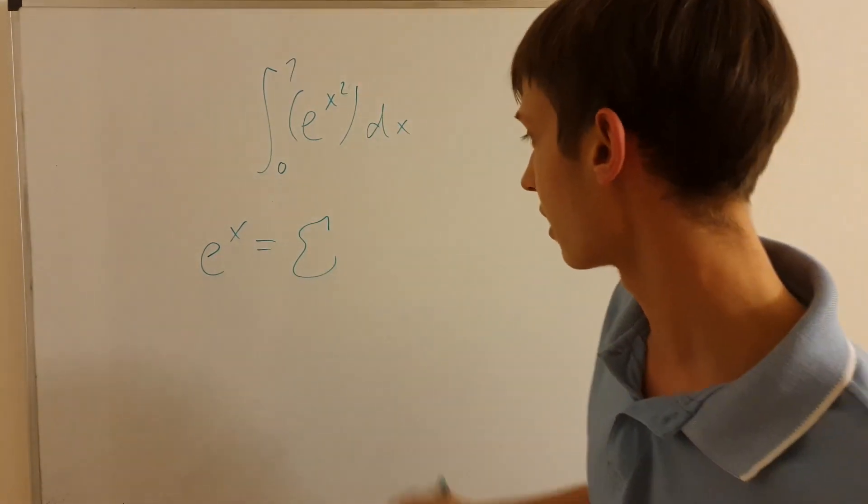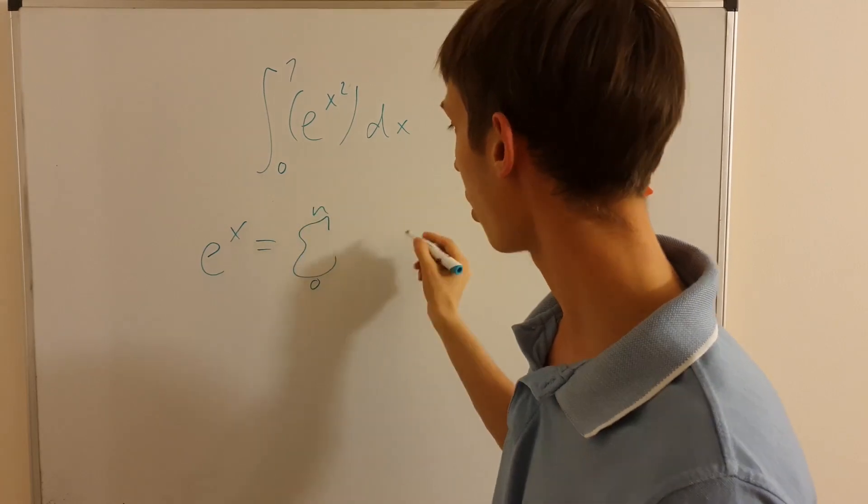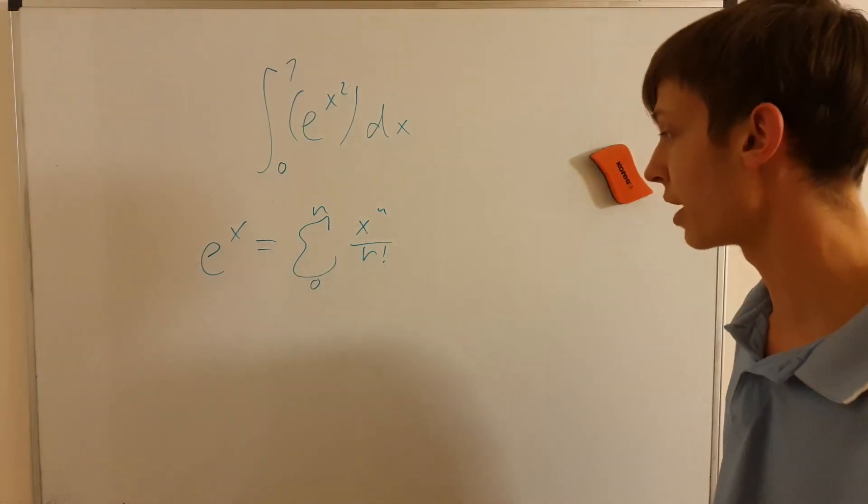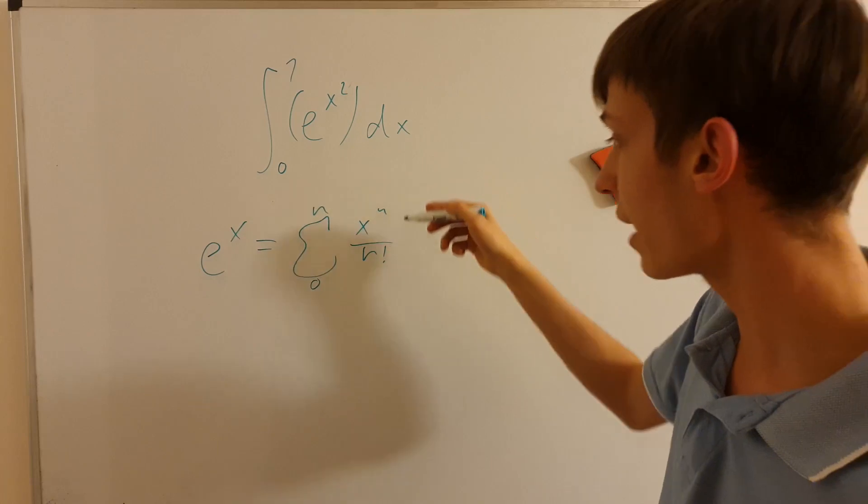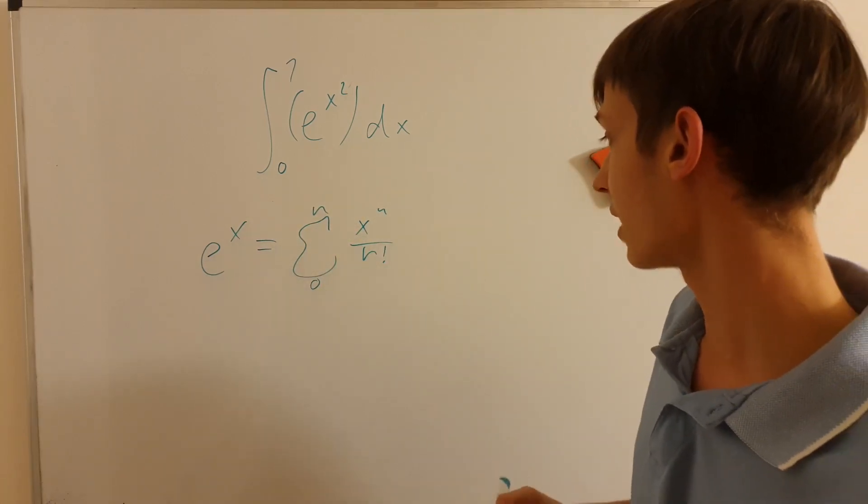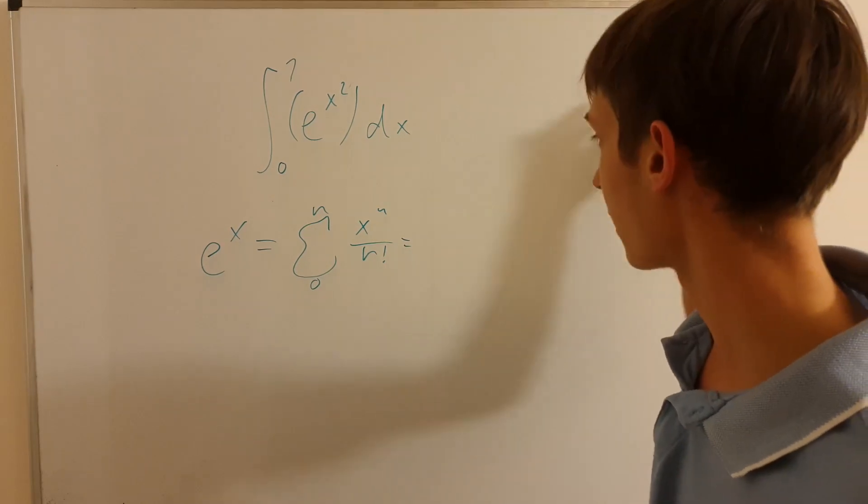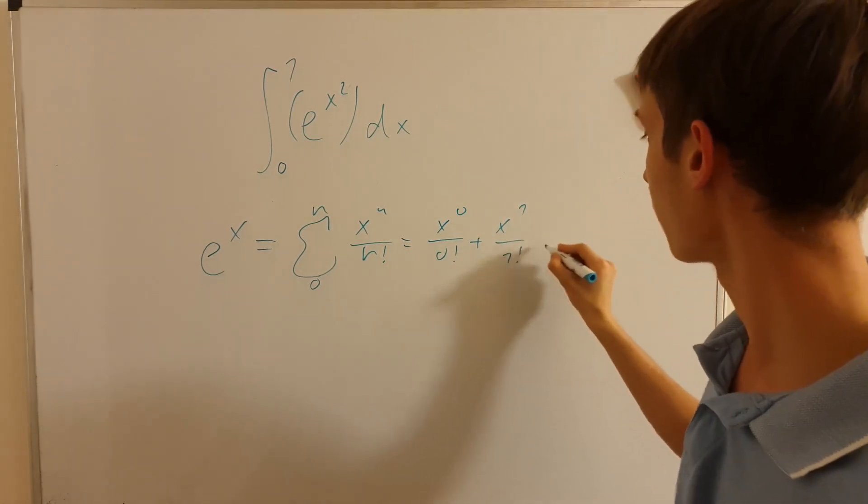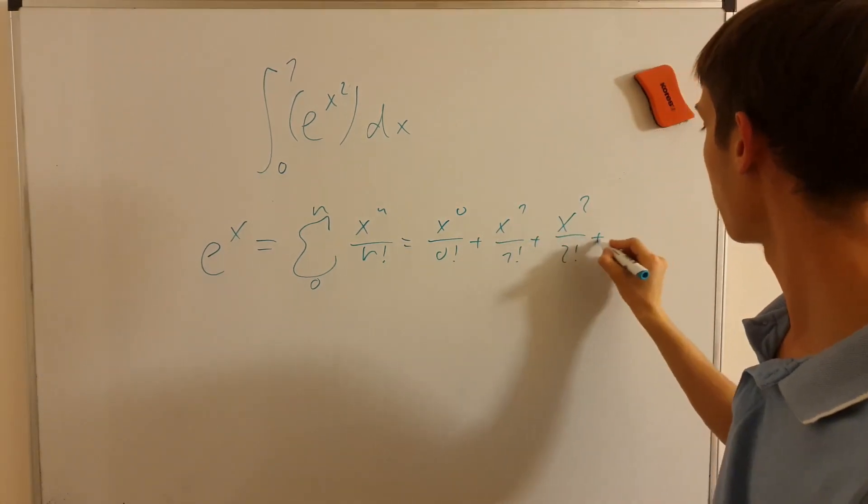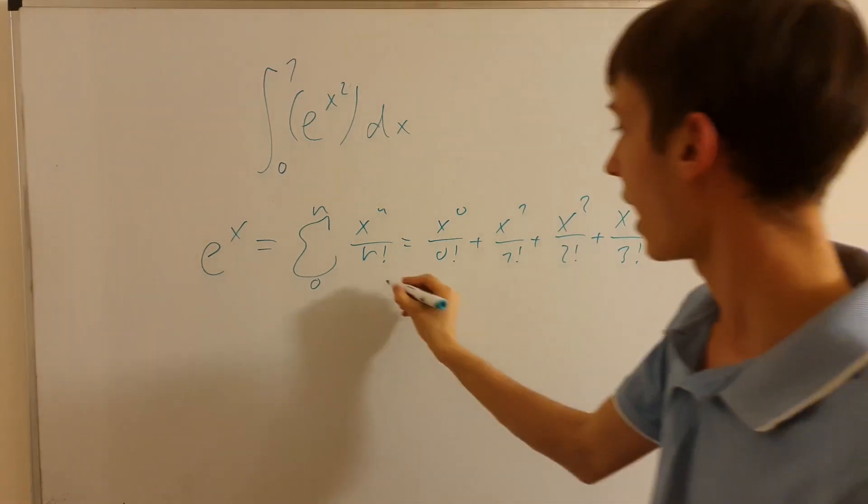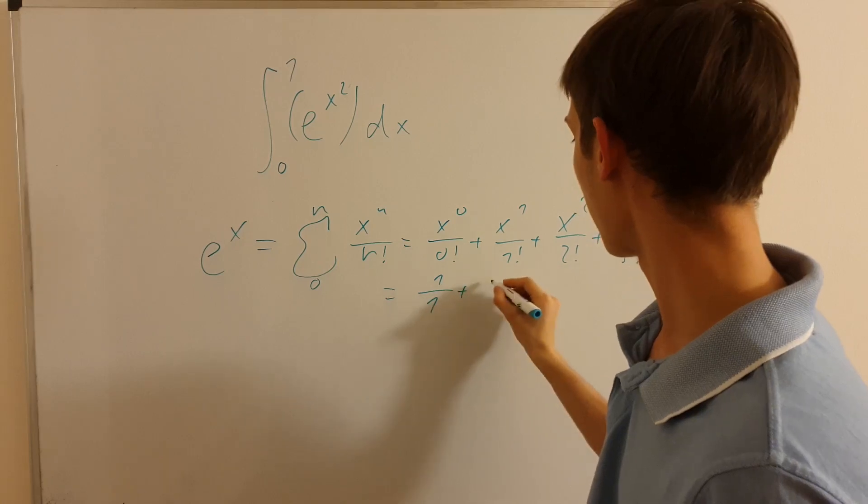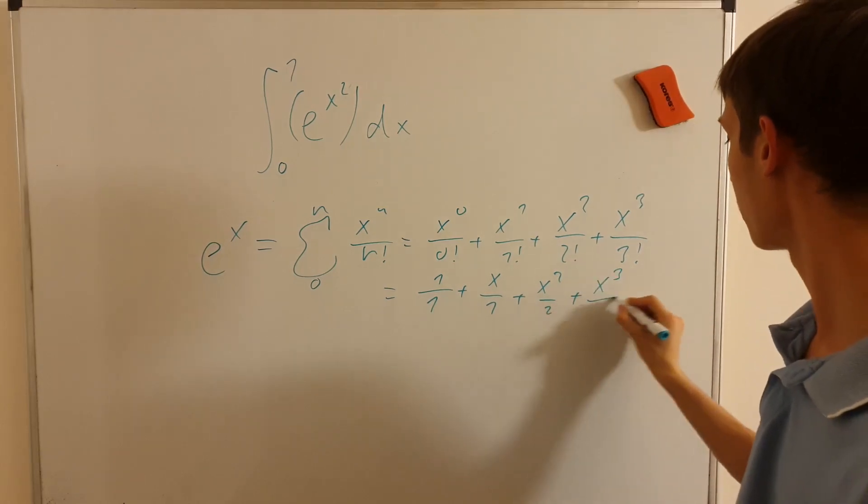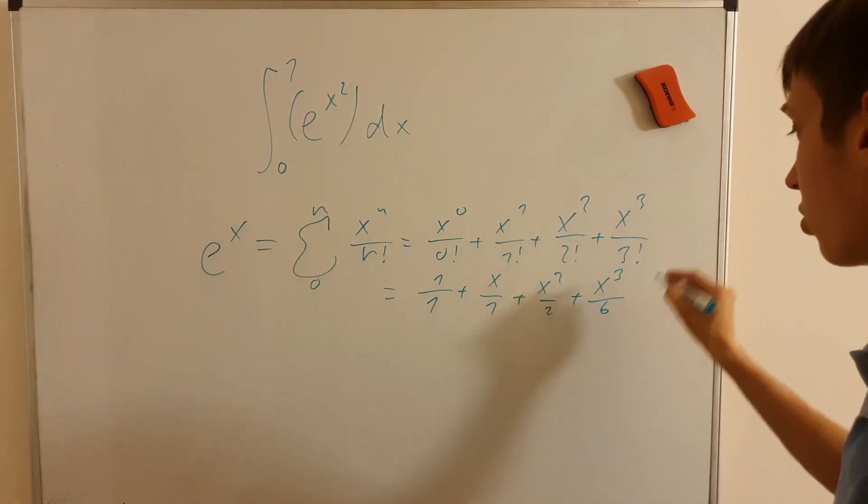It can be written using sum notation, so 0 to infinity of x to the n and n factorial in the denominator. So in the numerator is x to the n, starting with 0, and in the denominator is n factorial. That means that it will go something like this. It will go x to the 0 over 0 factorial plus x to the 1 over 1 factorial plus x to the 2nd over 2 factorial plus x to the 3rd over 3 factorial. And simplifying, it will be 1 over 1 plus x over 1 plus x squared over 2 plus x cubed over 6. And so on, and so on, and so on. And this goes forever.